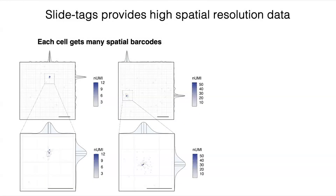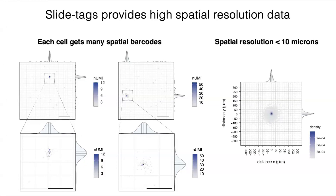As nuclei sit on top of the spatial bead barcode array and the oligos are released into the tissue, they diffuse, and we can look to see which spatial barcodes those nuclei have taken up. They form really tight distributions of spatial barcodes. Analogous to GPS, we can locate where these nuclei were in the original tissue from these populations of spatial barcodes — to approximately 3.5 micron resolution, which is analogous to the size of a nuclear radius itself.